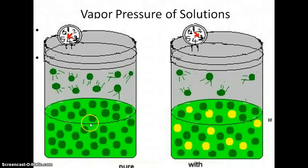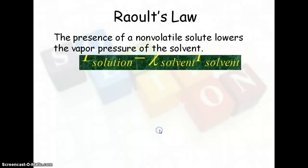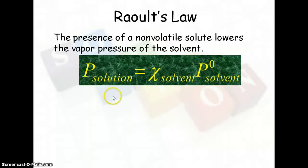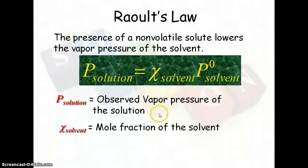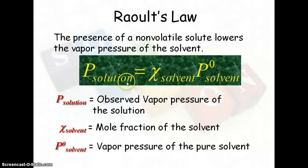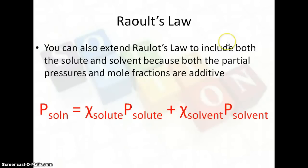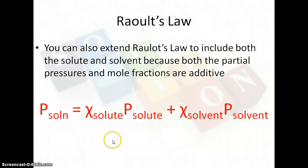Here's another look at it: in pure solvent you see more molecules going into vapor phase, but with solute molecules present they interact, and fewer go into vapor phase, resulting in a lower vapor pressure. We can describe vapor pressure specifically with the Raoult's Law equation: the pressure of the solution equals the mole fraction of the solvent times the pressure of the pure solvent. An extended form uses the mole fraction of the solute times the pressure of the solute plus the mole fraction of the solvent times the partial pressure of the solvent, since partial pressures and mole fractions are both additive.